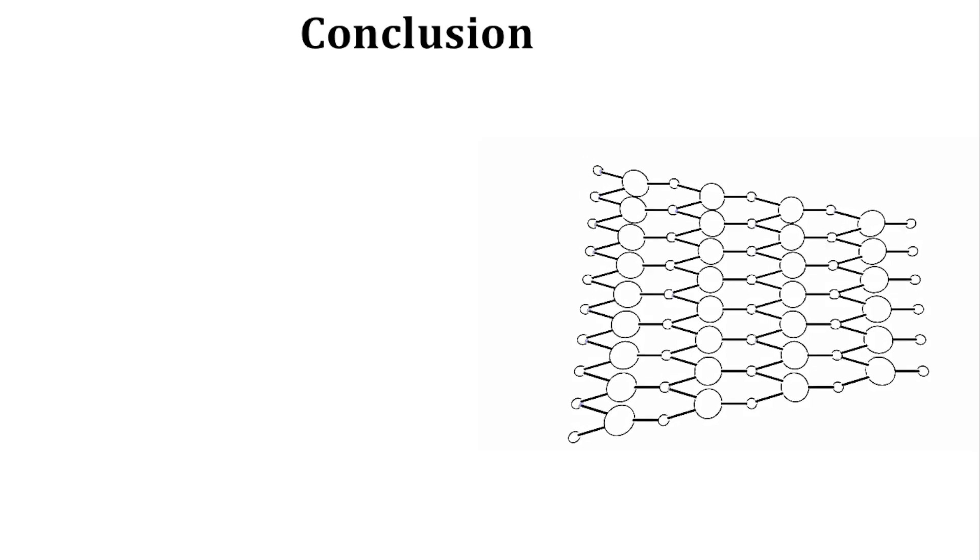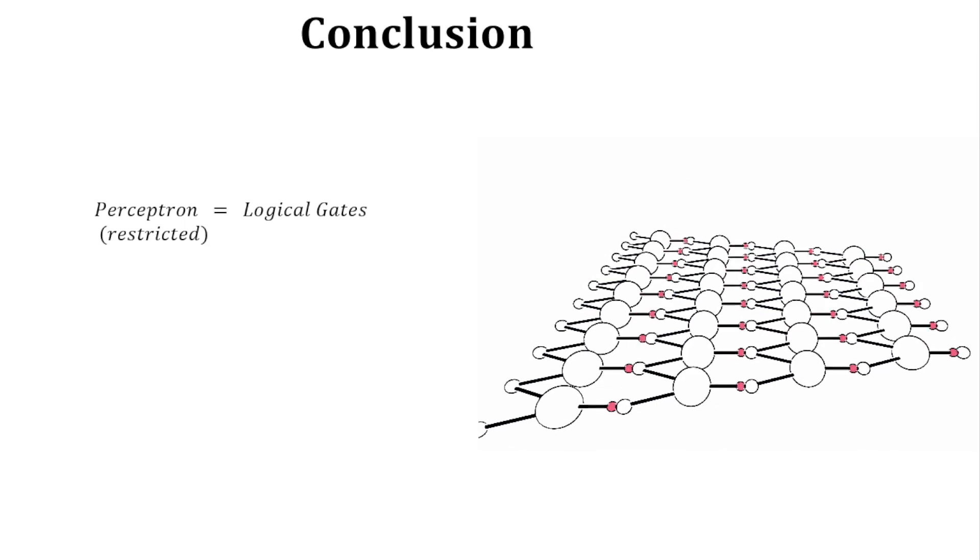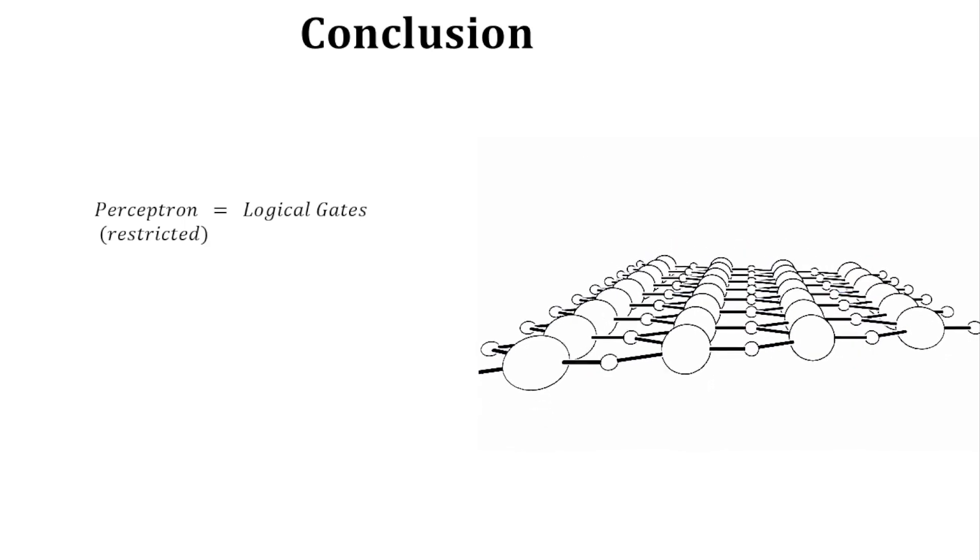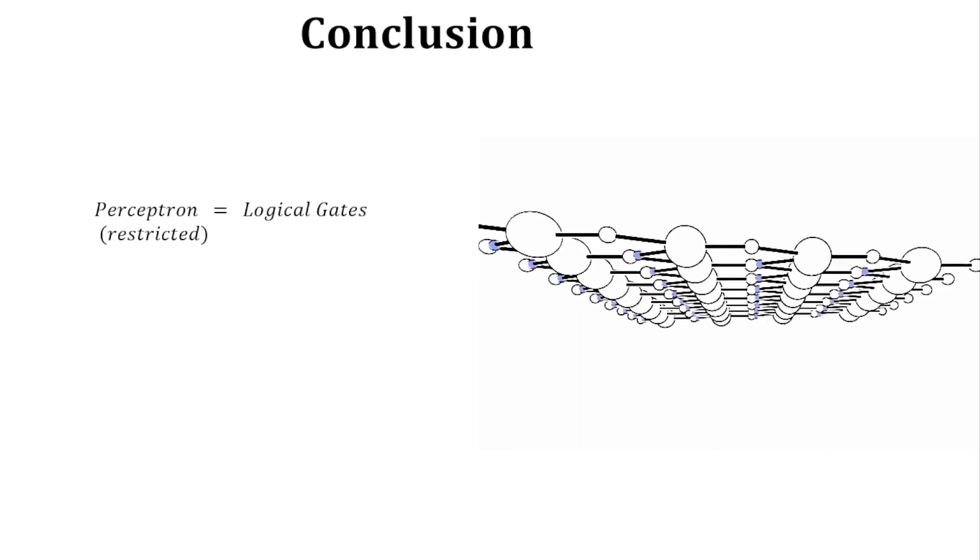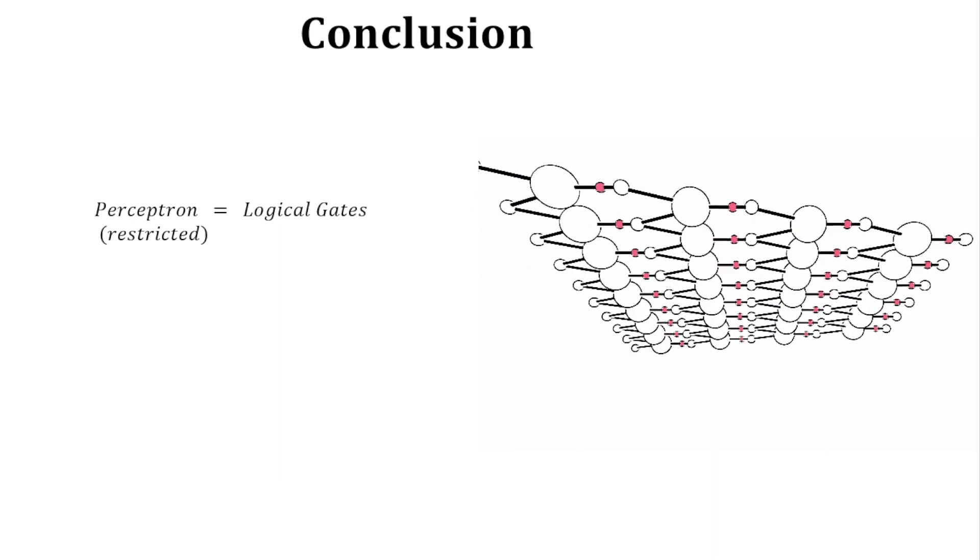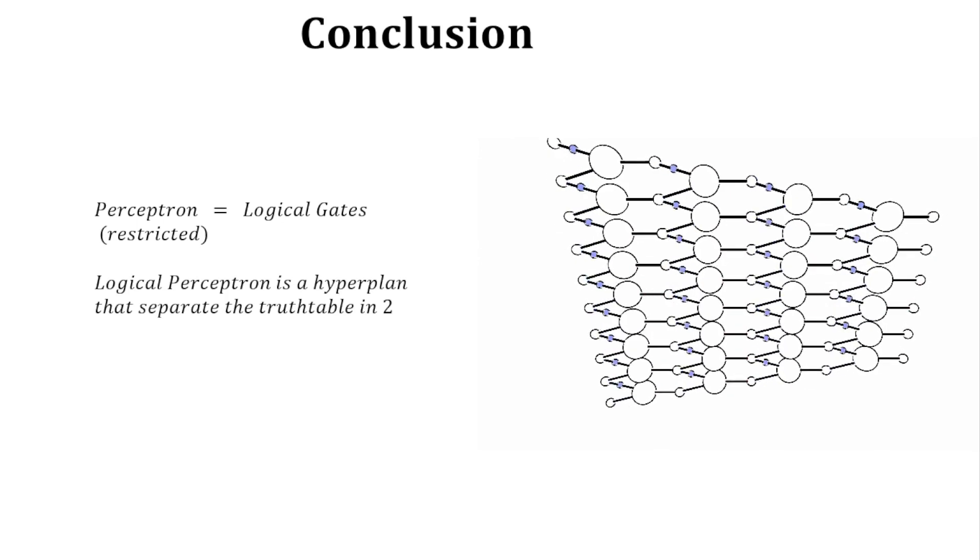So, we are close to the end. What we have seen so far is that perceptrons become a logical gate as soon as we restrain the domain of input-output as boolean. The impact of the perceptron parameters on the logical gate is more clear when considering a perceptron as a hyperplane that cuts the truth table in two.